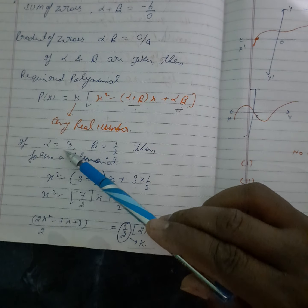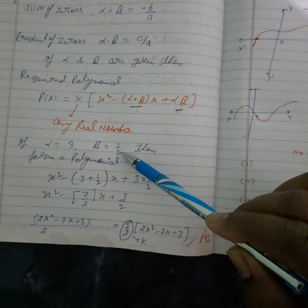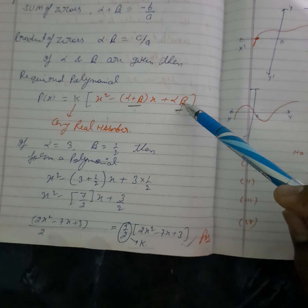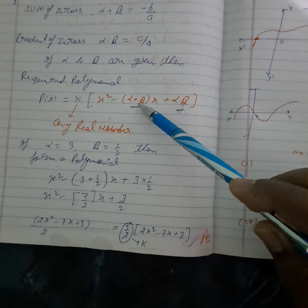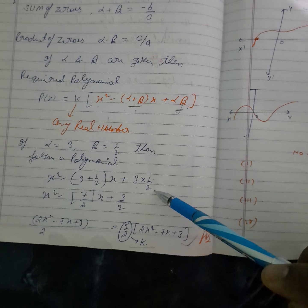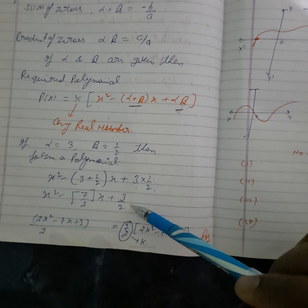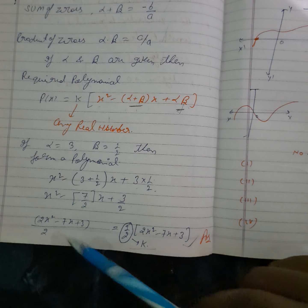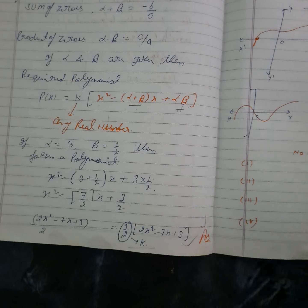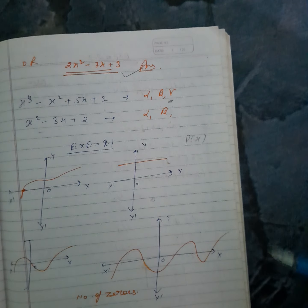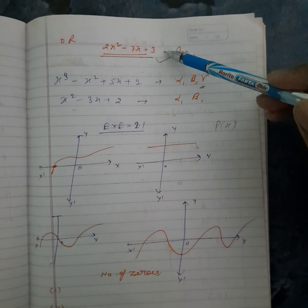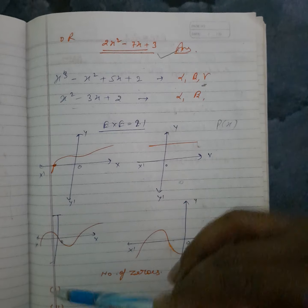Now we will discuss one question. Let alpha equal to 3, beta equal to 1 by 2. Then you have to find out a polynomial whose zeros are 3 and 1 by 2. The required polynomial is x squared minus (alpha plus beta) times x plus alpha times beta. Putting alpha as 3 and beta as 1 by 2: x squared minus (3 plus 1 by 2)x plus 3 times 1 by 2, which gives x squared minus 7/2 x plus 3/2. Taking LCM: 2x squared minus 7x plus 3 upon 2, or equivalently 2x squared minus 7x plus 3. Both answers are correct.